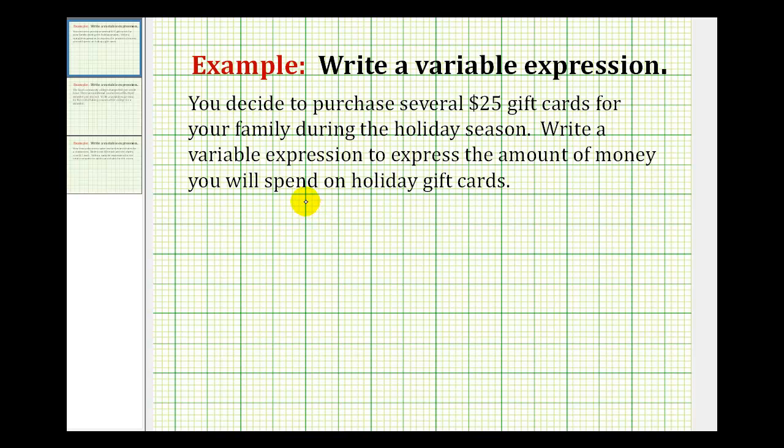Currently we're not exactly sure how many gift cards you will purchase, so we'll assign the variable g to equal the number of gift cards purchased. If each gift card costs $25, the total amount of money spent on the gift cards would be $25 times g.